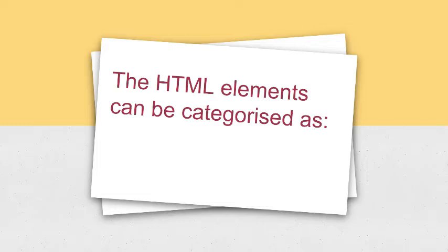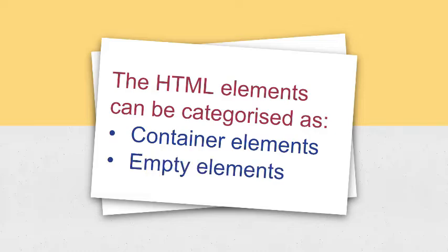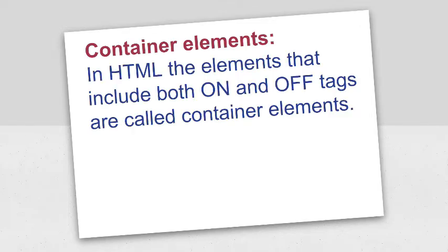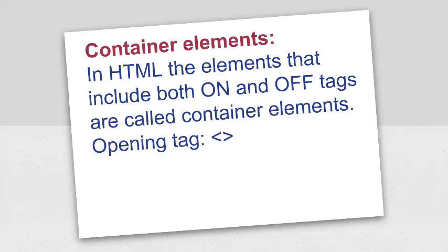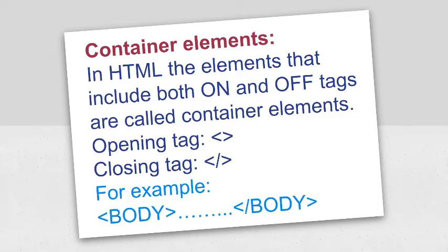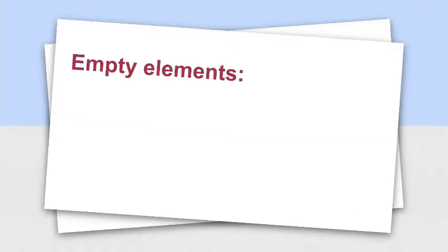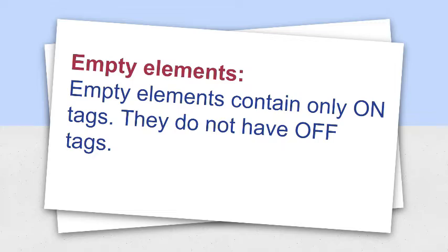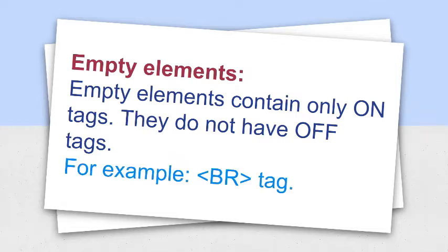HTML elements can be categorized as container elements and empty elements. Container elements: tags that include both opening and closing tags are called container elements. The opening tag uses only angle brackets, while the closing tag uses a forward slash along with angle brackets. For example, the body tag is a container tag. Empty elements contain only opening tags and do not have closing tags. These elements do not contain any data; instead, they work on their own. For example, the BR tag, which has only an opening tag.